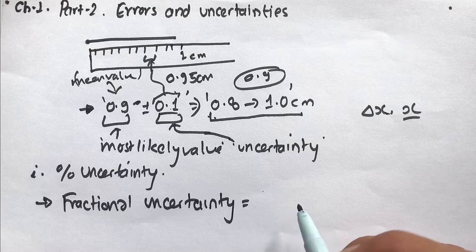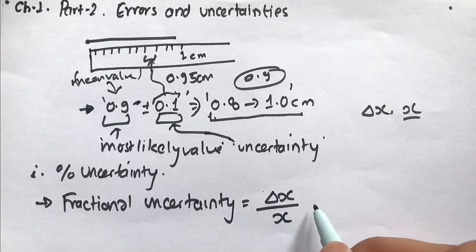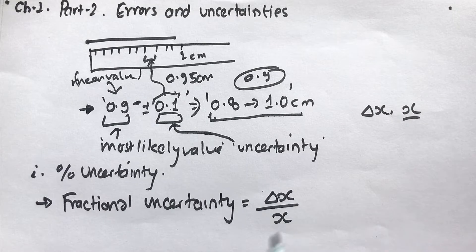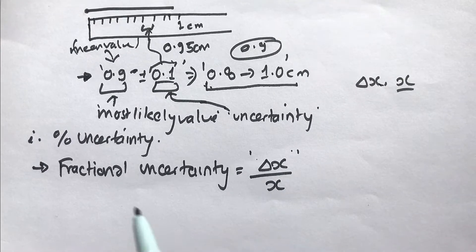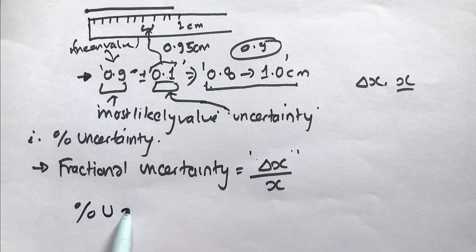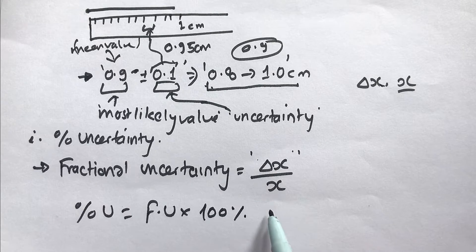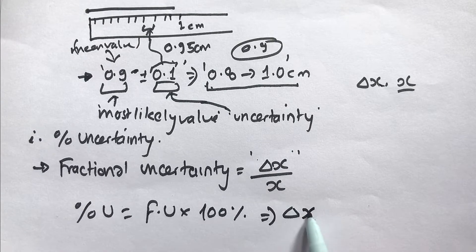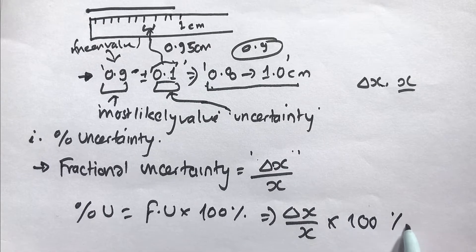Fractional uncertainty is delta x divided by x. Percentage uncertainty is fractional uncertainty times 100%, or equivalently delta x divided by x times 100%.